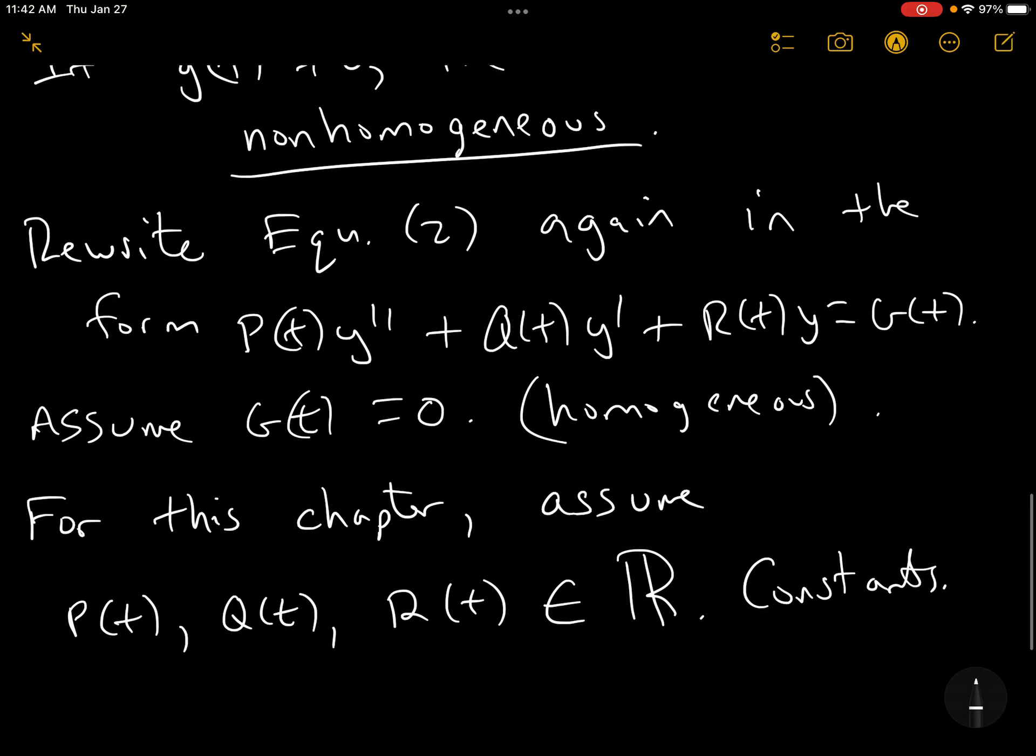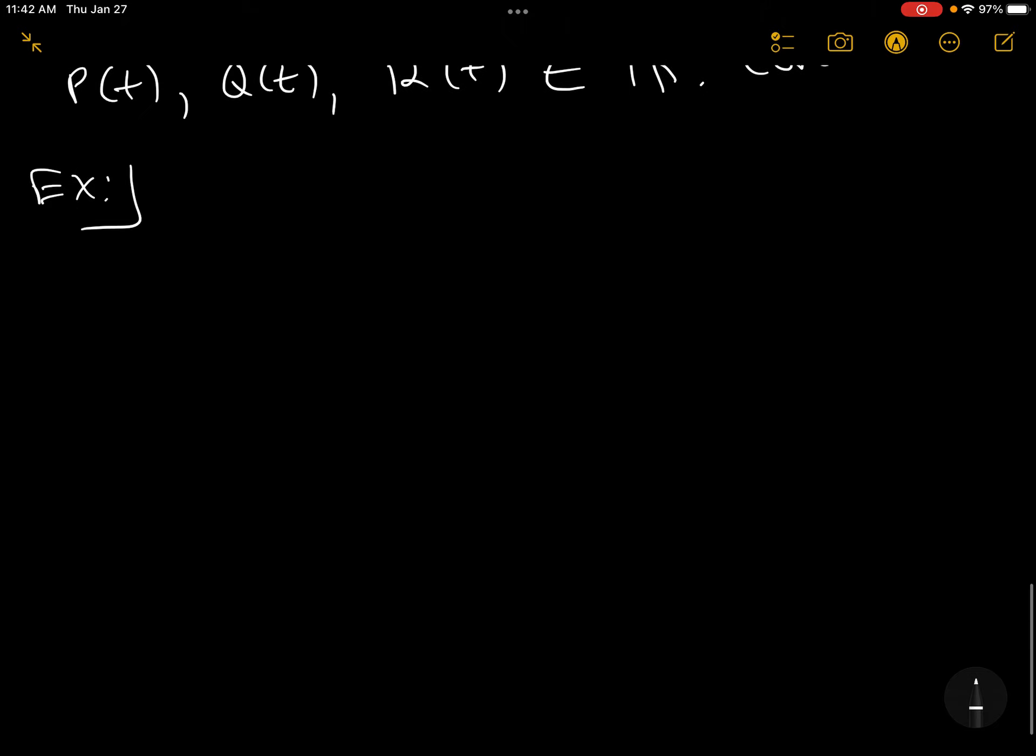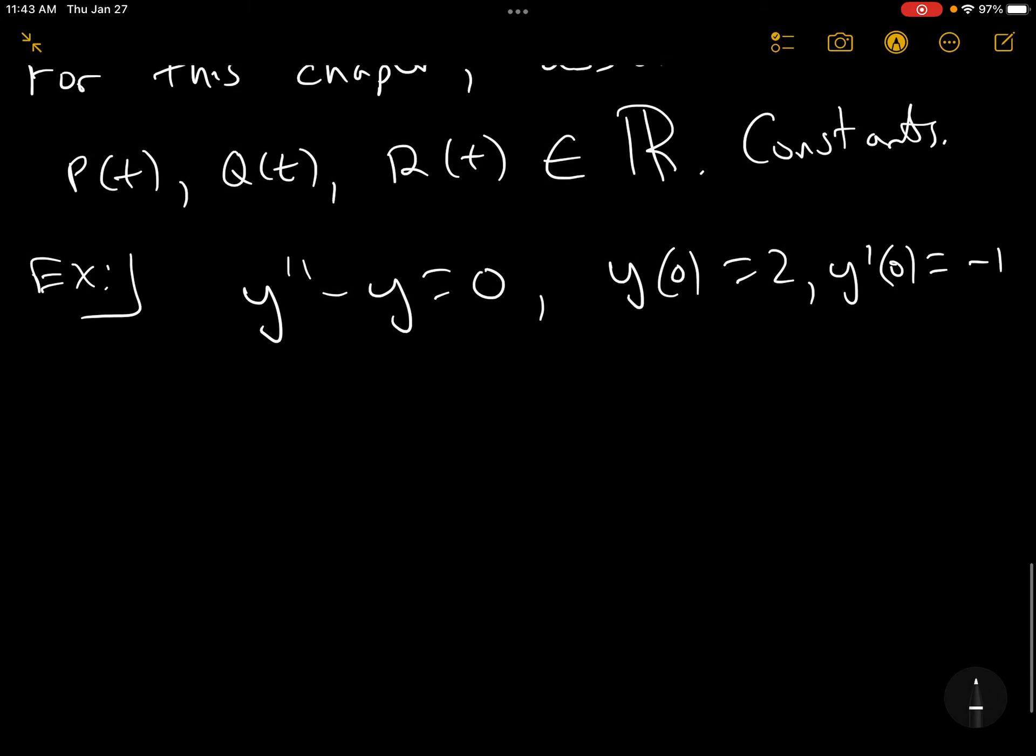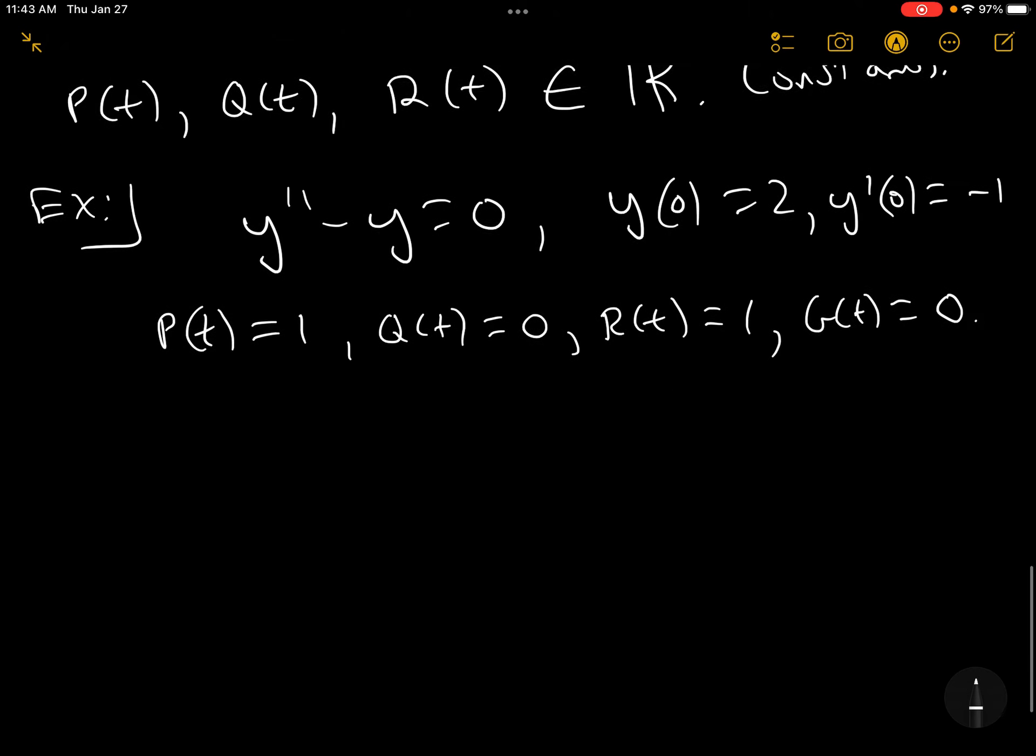So now, assume G sub T is zero, so it's homogeneous. For this chapter, we're going to assume that these functions, P sub T, Q sub T, and R sub T are all elements of the real numbers. They're constants. And there will be one point where we allow non-constant polynomials to land in front of the Y and Y prime and Y double prime. But for the bulk of this, we're going to assume that P, Q, and R are just constants. And like most things, you build up from that. So here is an example. Here is an ODE. Y double prime minus Y equals zero. And we will make it an IVP. Y of zero equals two. And Y prime of zero equals minus one.